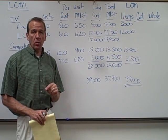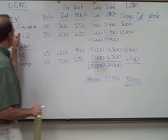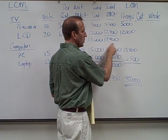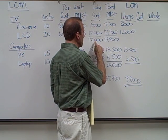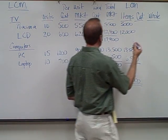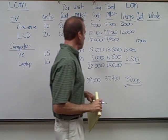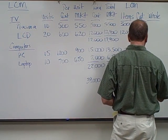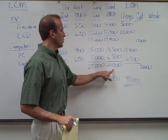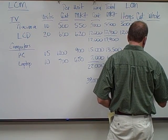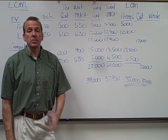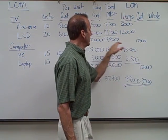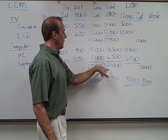If the problem asks you to calculate by category, you look at the subtotals rather than individual items. For the TV category, cost ($17,000) is lower than market ($17,900), so we use $17,000. For the computer category, market ($20,000) is lower than cost ($22,000), so we use $20,000. Totaling these gives $37,000 — the same result here, though that's not always the case.